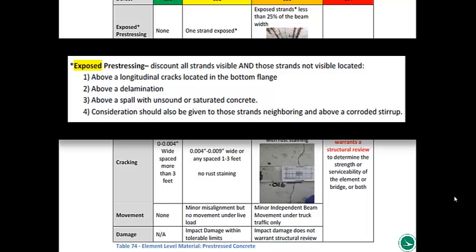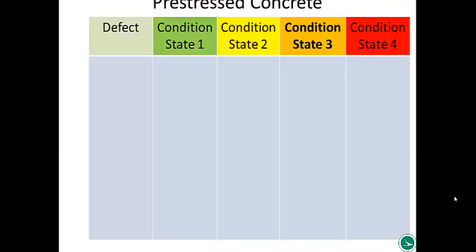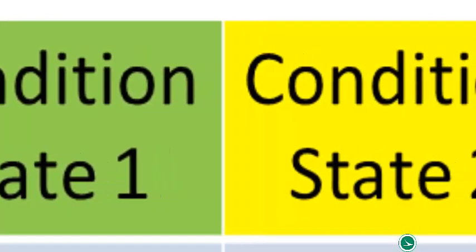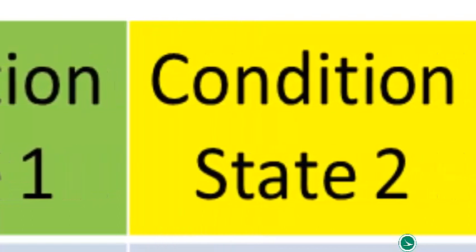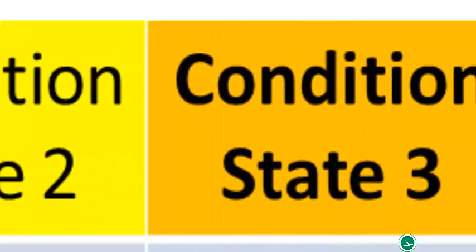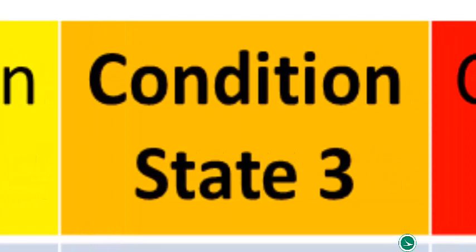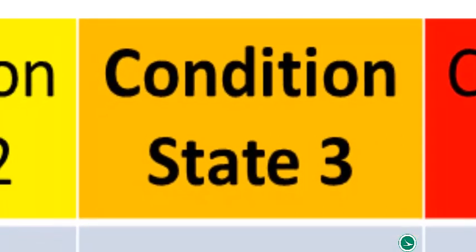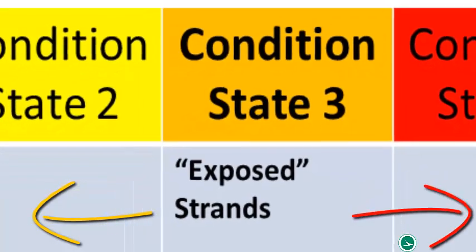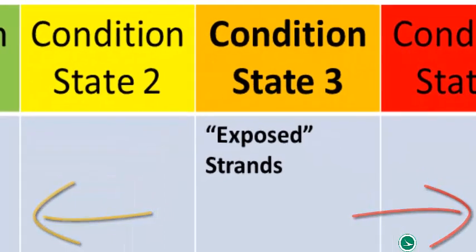What exposed pre-stressing really means is exposure to chlorides — exposure to the corrosive process. Here's our normal condition state chart. Moving left to right, you have good, fair, poor, and severe. I've bolded condition state three because that's where I'll begin talking about defects. As with most materials, condition state three is the best place to start for your quantities if there's distress, and then we determine whether it should scatter toward good, remain in three, or move to severe.